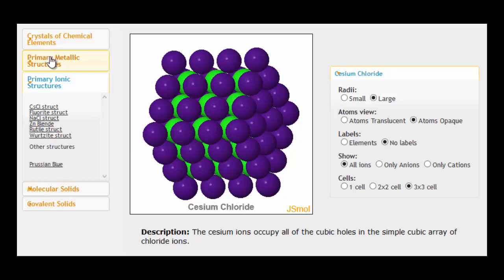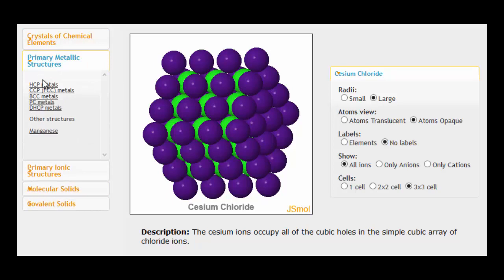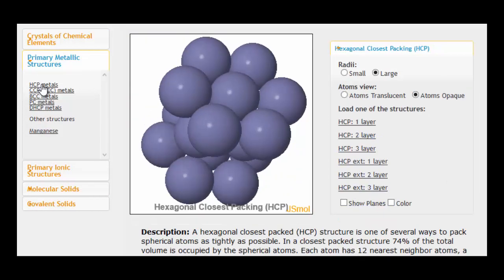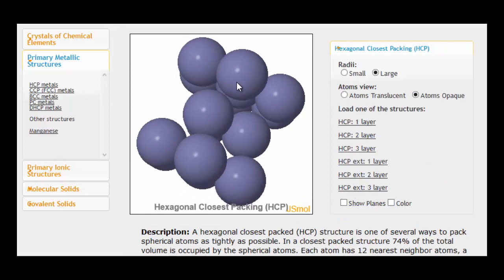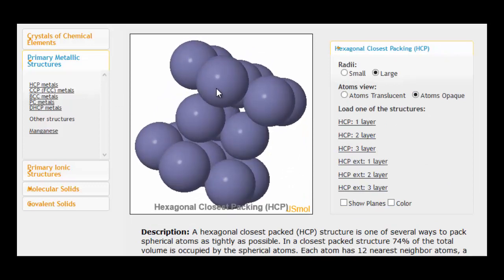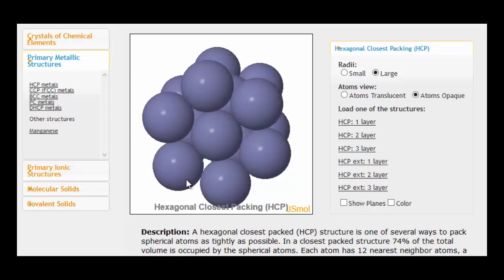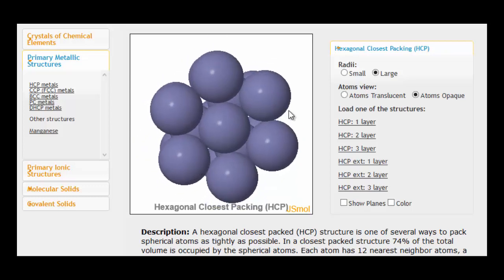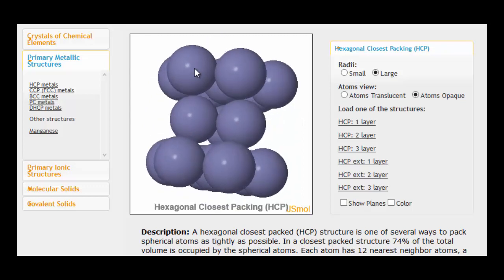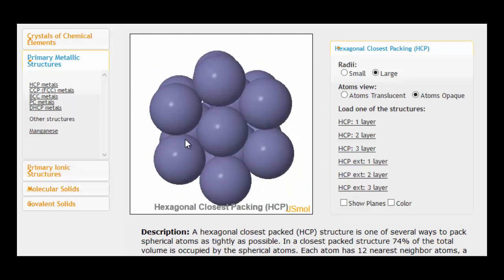If we now look at a metallic lattice, this structure here is called hexagonal close packed. And there are quite a few metals that take this particular lattice. If I twist it around this way, you can see that within each layer, this shows three layers here, within each layer you can see that the atoms arrange themselves into a sort of hexagonal pattern. So that's where the name comes from.